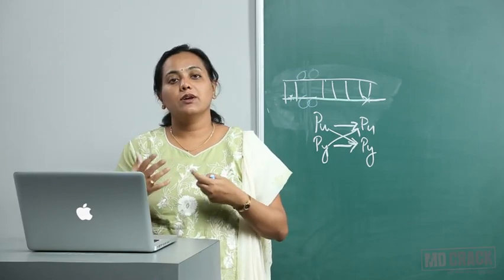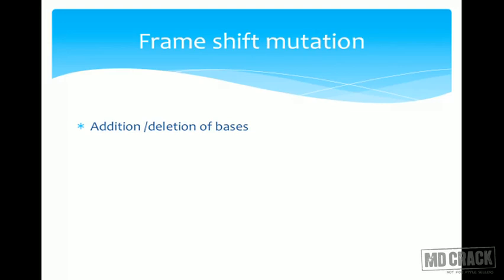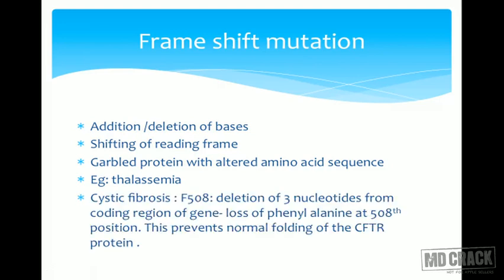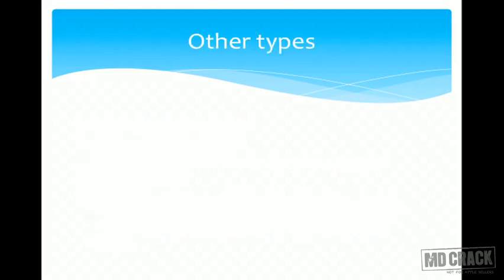Frameshift mutation results from addition or deletion of bases, causing a shift in the reading frame and producing a garbled protein with an altered amino acid sequence. Example: in cystic fibrosis, deletion of three nucleotides at position 508 removes phenylalanine, preventing normal folding of the CFTR protein and causing loss of function.